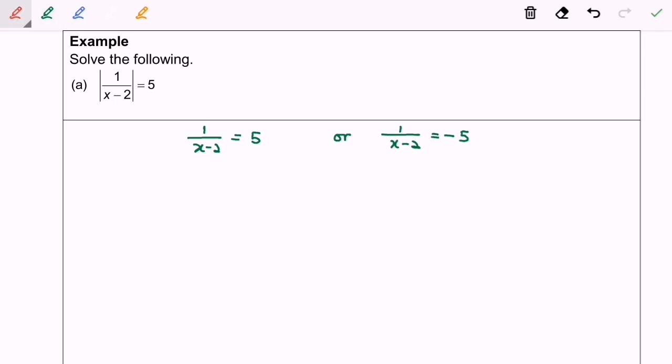I'm going to cross multiply, so we will have 1 equals 5(x - 2). Expanding and rearranging the equation, we will have 1 equals 5x minus 10.